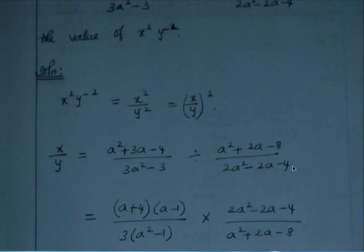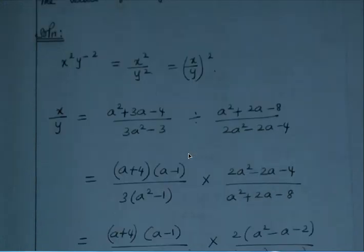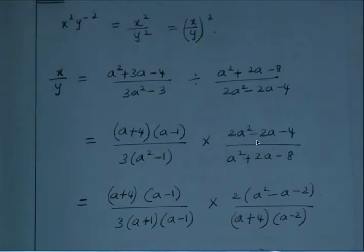When we divide x by y, dividing is the same as multiplying by the reciprocal — so the numerator and denominator swap. This is where we apply the factor tree method to simplify the expressions.